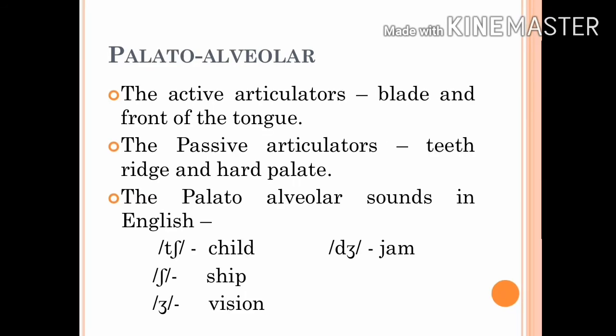Palato-alveolar: the blade of the tongue and the front of the tongue are the active articulators, and the teeth ridge and the hard palate are the passive articulators. In English, the sounds CH as in 'child', J as in 'germ', SH as in 'ship', and ZH as in 'vision' are the four palato-alveolar sounds.